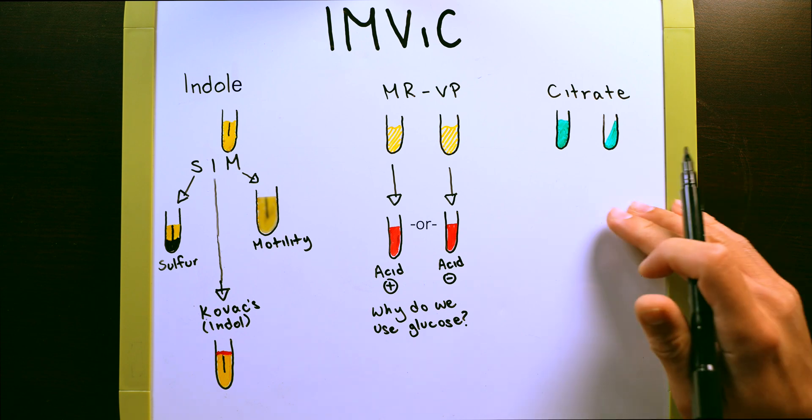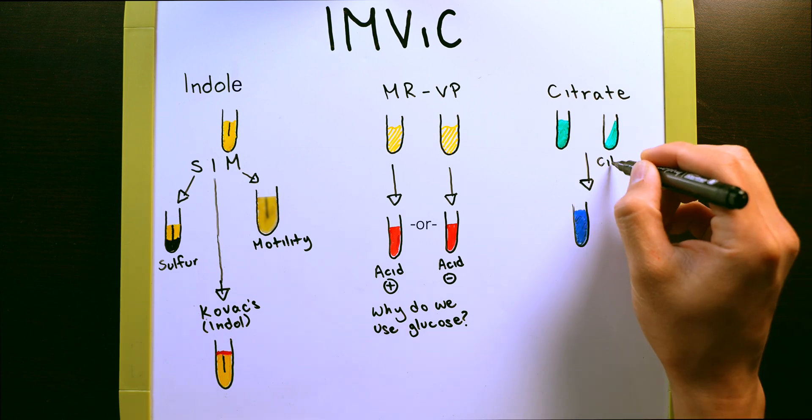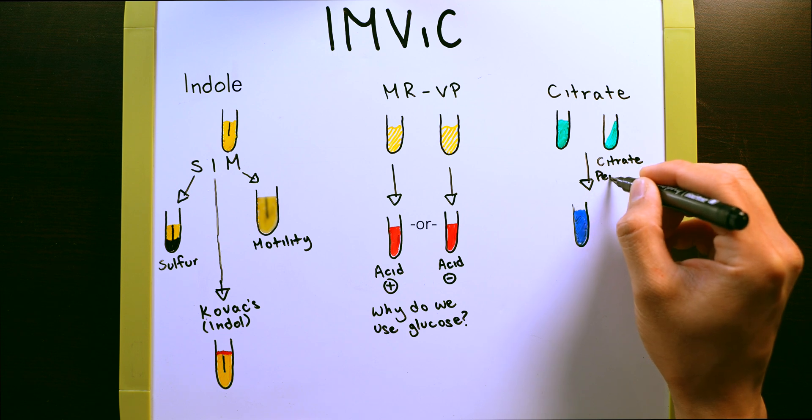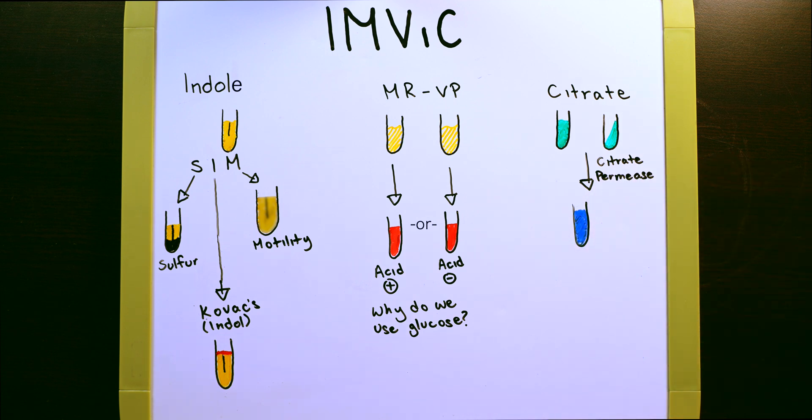Lastly, your citrate test. The citrate test takes virtually no time at all. And all that you're doing here is looking for a simple color change. The color change that you're looking for is from a green to a blue color. And what this means is that the bacteria has the enzyme citrate permease.